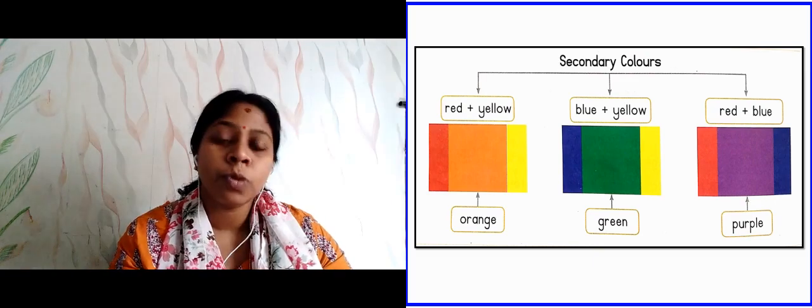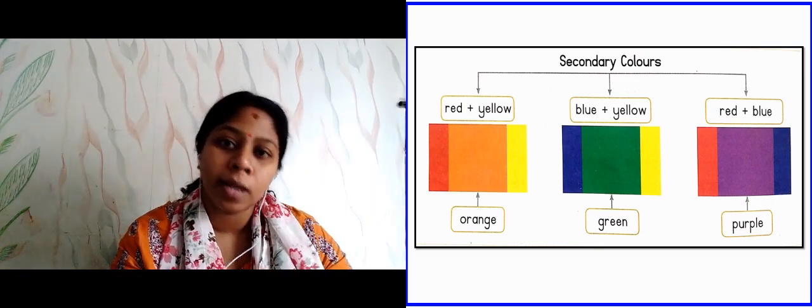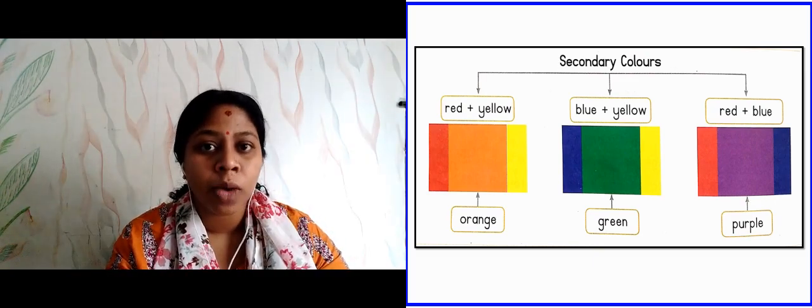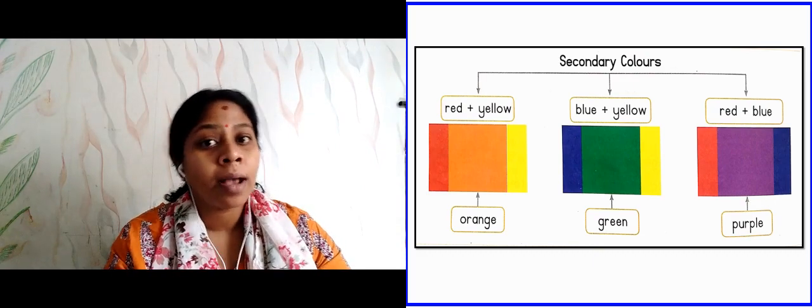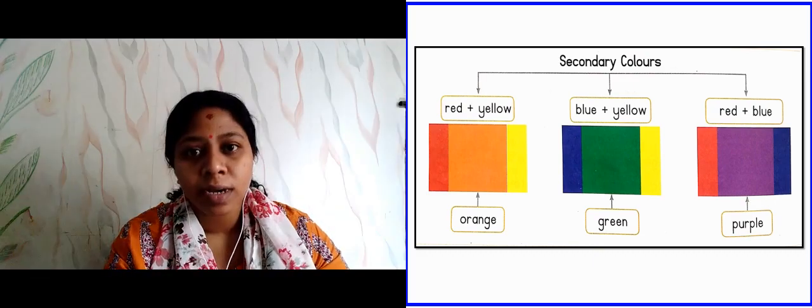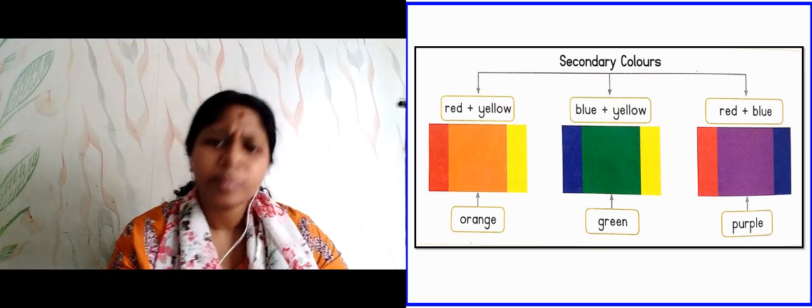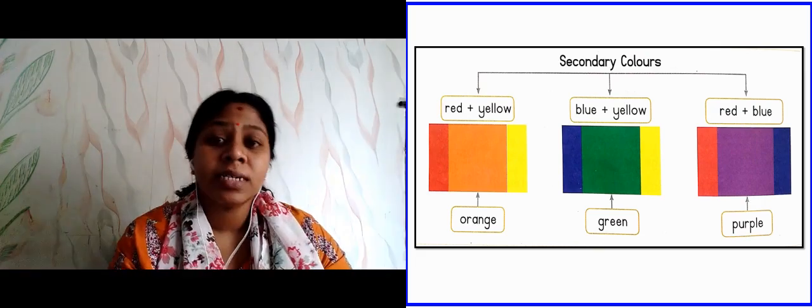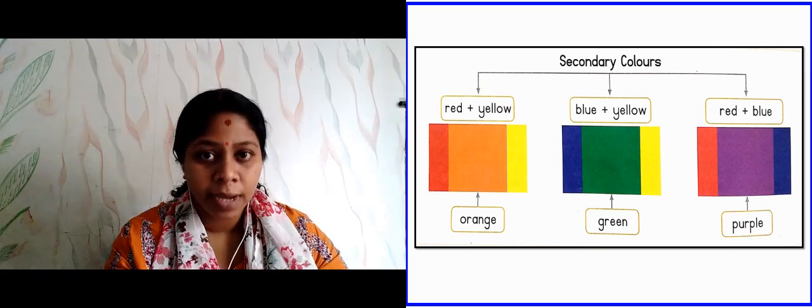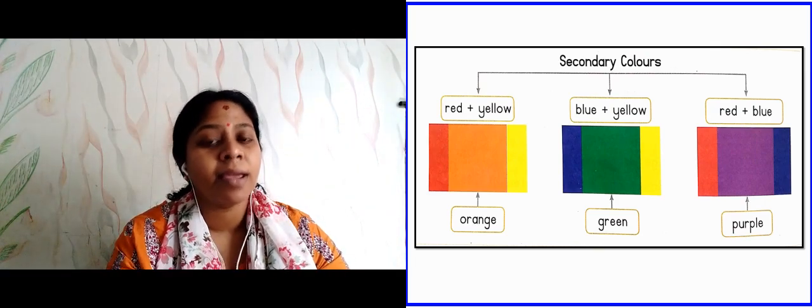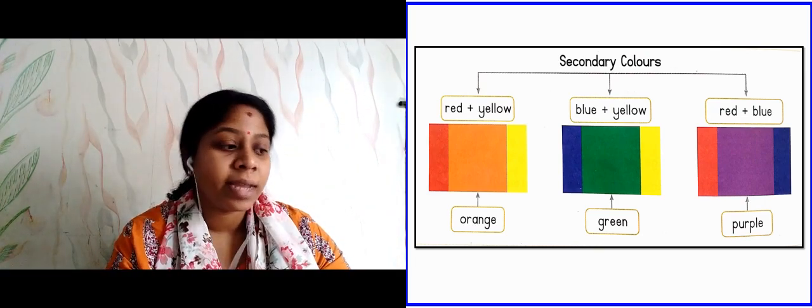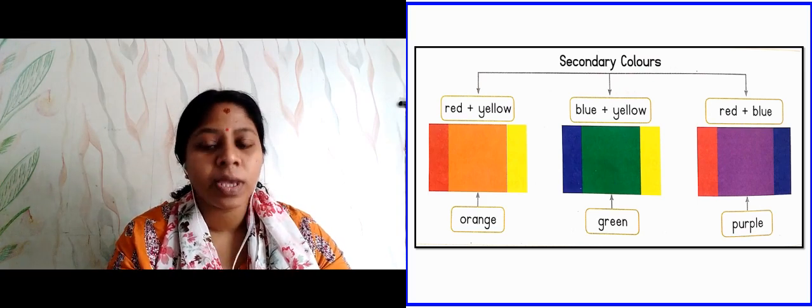Same process we will do with blue and yellow color. So primary colors are blue and yellow. If we mix it, which color do we get? Yes, we'll get green color. Again, you will mix red and blue color. Primary colors are red and blue. So which color do we get? Yes, we get purple color.